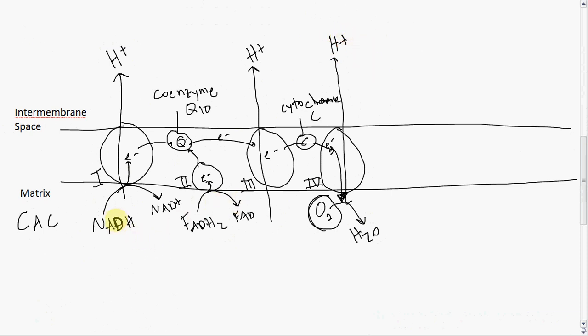When NADH and FADH2 donate their electrons to the electron transport chain, those electrons go through all these transfers so that the energy can be harnessed to pump out H+ ions. This creates a really high concentration of H+ on the intermembrane space side—lots of H+ on this side, not very much H+ on the matrix side.